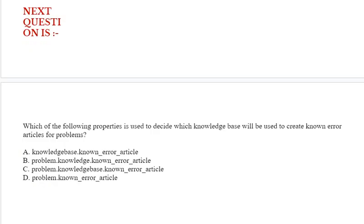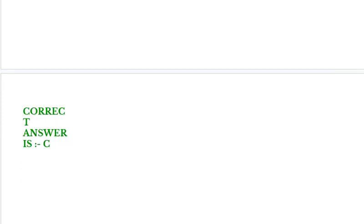Which of the following properties is used to decide which knowledge base will be used to create known error articles for problems? See options A, B, C, and D. Correct answer is option C.